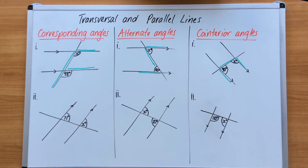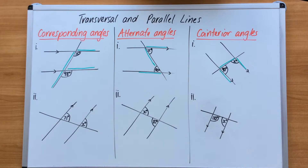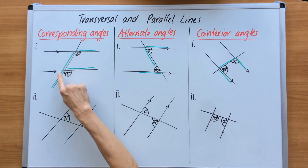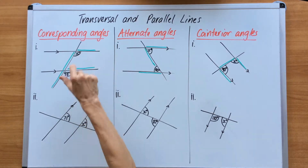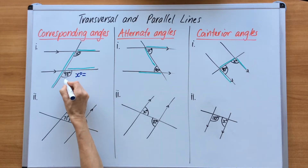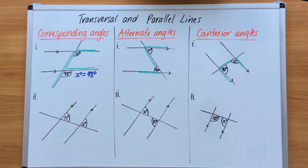We are going to continue from the previous examples on transversal and parallel lines, focusing on corresponding angles, alternate angles, and co-interior angles. We've got six examples here and we're going to solve the missing value of X in each question. For corresponding angles we have to locate the F shape with two angles tucked up under the armpits. I found that here, and corresponding angles are equal in size, so X degrees will be the same value as this one here, which is 98 degrees.